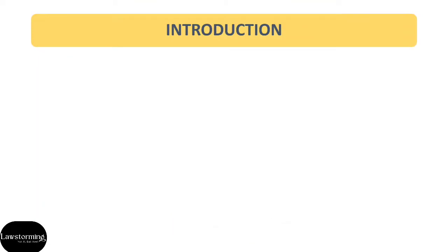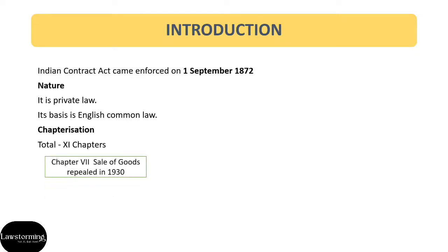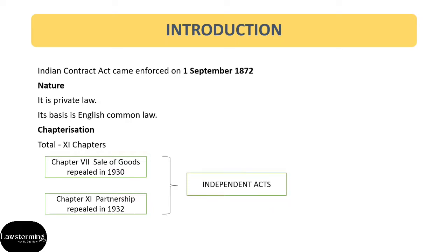So in today's video, we will basically take an overview of Indian Contract Act. The Indian Contract Act came into force on 1st September 1872. The nature of Indian Contract Act is that it is private law and it is based on English common law. There are total 11 chapters in Indian Contract Act. However, Chapter 7, which deals with Sale of Goods Act, and Chapter 11, which deals with Partnership Act, were repealed in the year 1930 and 1932 respectively, and then these two acts became independent acts.